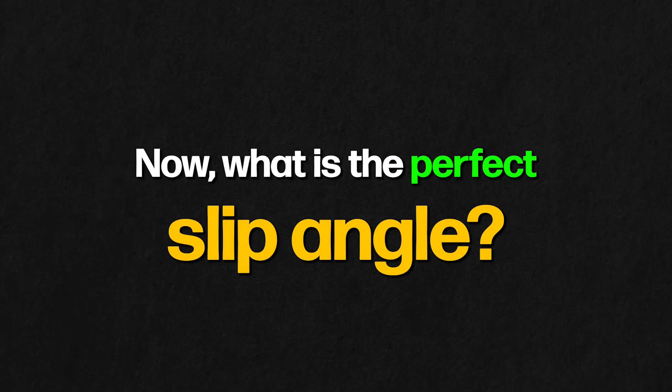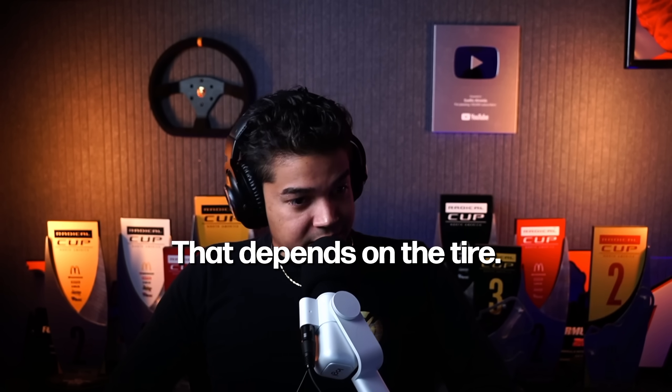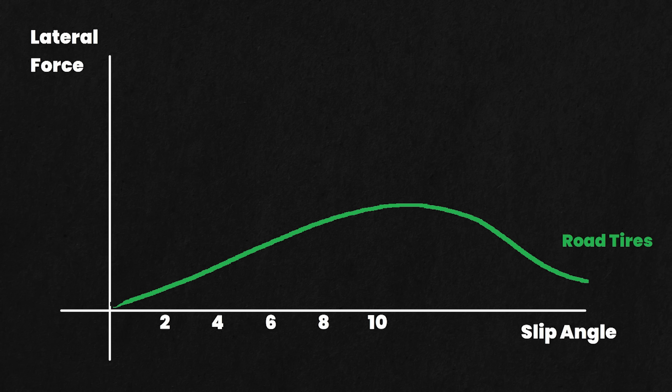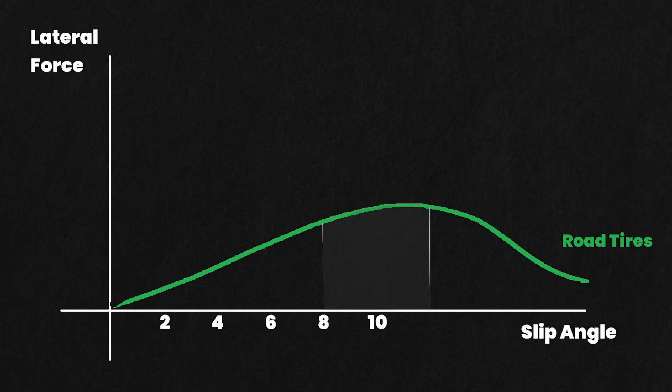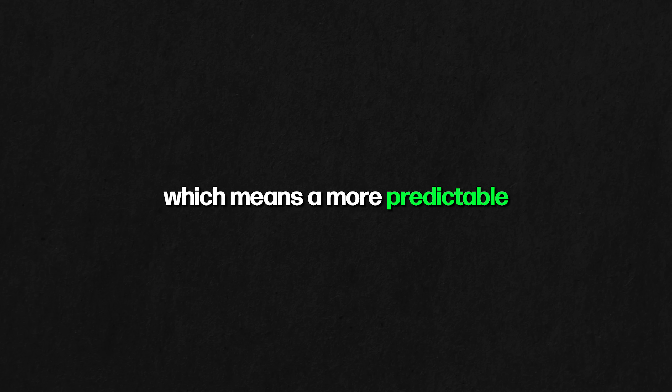What is the perfect slip angle? That depends on the tire. Street tires, designed for everyday driving and meant to have a long lifespan, have their optimal slip angle at around 8 to 12 degrees. The buildup of lateral force in these tires is more progressive, the feedback is more forgiving, and when we go past the optimal slip angle, the grip decreases smoothly, minimizing the chance of a sudden loss of control. The area in which grip is close to its maximum is relatively large, which means more predictable handling behavior.